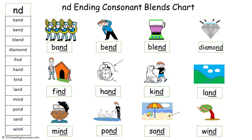Now read the words on the ND ending consonant blends chart: band, bend, blend, diamond, find, hand, kind, land, mind, pond, sand, and wind.